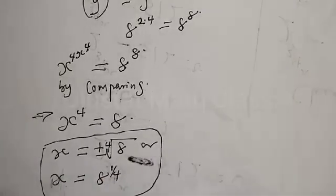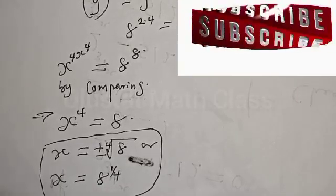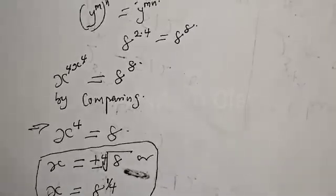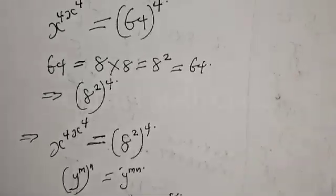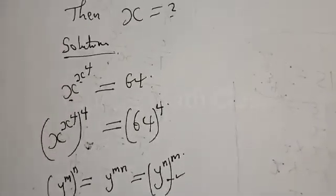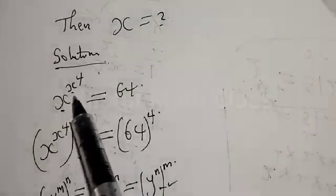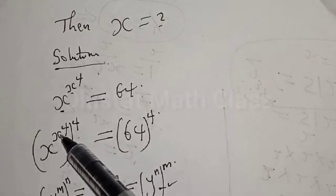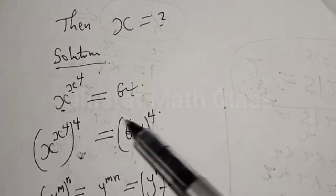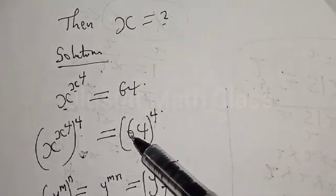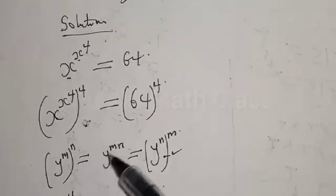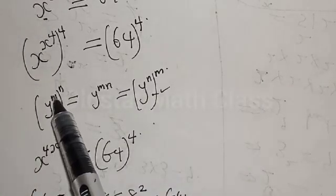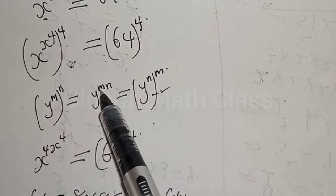That is the easiest trick to solve this given equation. We have s raised to power s raised to power 4 equal to 64. From there we take s raised to power s raised to power 4 and multiply both sides by the power of 4, giving 64 raised to power of 4. We use the relationship that y raised to power m raised to power n equals y raised to power m n.